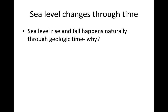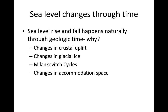Sea level changes through time — it rises and falls naturally. The causes include changes in crustal uplift, eustasy, changes in glacial ice, Milankovitch cycles, and changes in accommodation space. These can happen in conjunction: Milankovitch cycles influence glacial ice, and the more glacial ice there is, the harder it is for crust to uplift because it's weighted down. All of these can blend into one another.